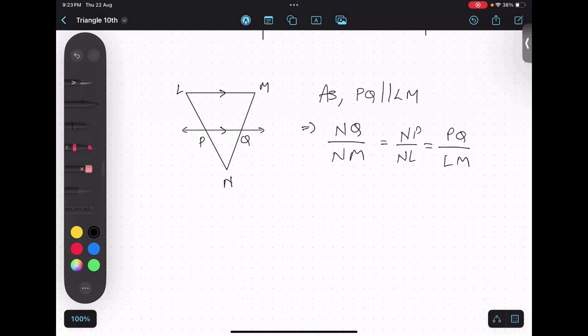Now extending the thought, reverse is also true. NM upon NQ equals to NL upon NP equals to LM upon PQ. Now which one to take? It depends upon the question. Actually these two are almost same, yes or no? I didn't reverse, just reverse. But the most important part I'm going to teach right now. Have you copied this thing? Yes.